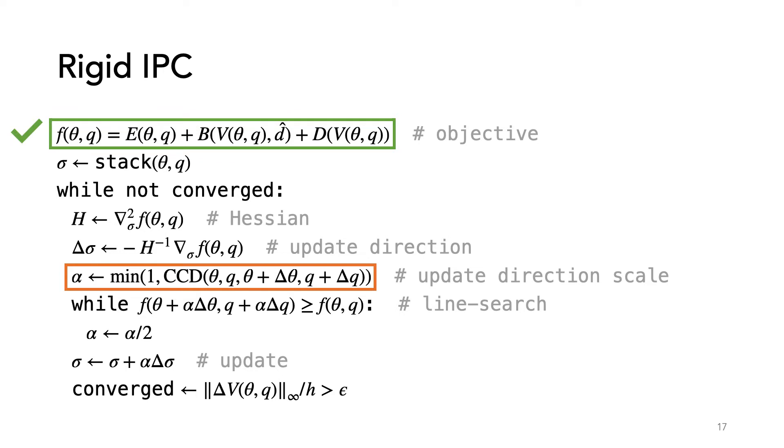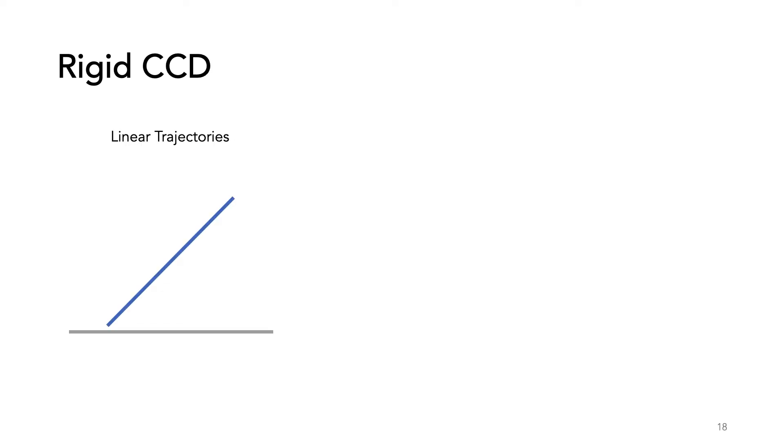Now that we have the potential for rigid body dynamics, we can look at CCD. The first thing to try would be to reuse the linear CCD, but this can miss collisions. For example, if we rotate this edge, it collides with the ground, but the linear trajectory does not.